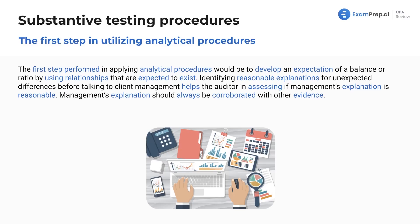The first step in utilizing analytical procedures in substantive testing is to develop an expectation of a balance or ratio using relationships that are expected to exist. We have a whole lesson on analytical procedures where you're developing expectations and testing ratios to make sure they're in line with your expectations. Identifying reasonable explanations for unexpected differences before talking to client management helps the auditor assess if management's explanation is reasonable.